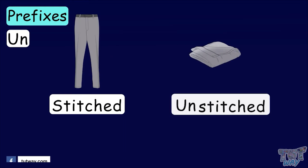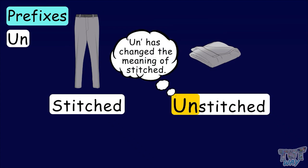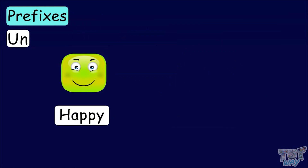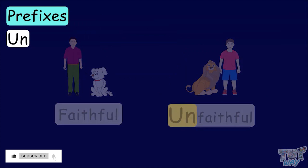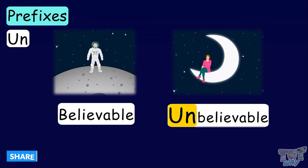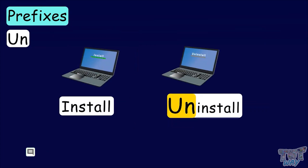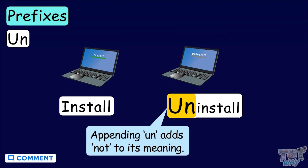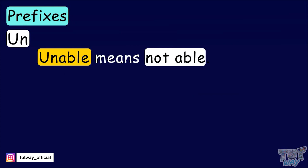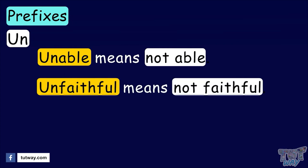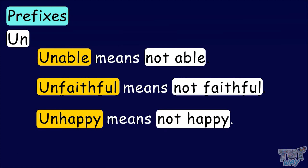Stitched, unstitched. Here we have a prefix, un, that has changed the meaning of stitched. Happy, unhappy. Faithful, unfaithful. Believable, unbelievable. Install, uninstall. Appending un before a word changed its meaning and added 'not' to its meaning. Unable means not able. Unfaithful means not faithful. Unhappy means not happy.